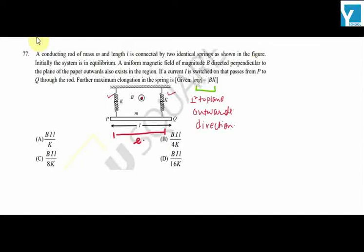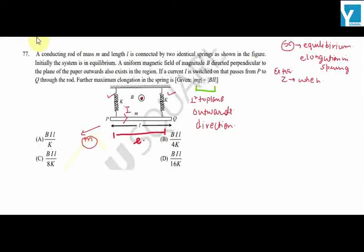So suppose this rod has given mass m. Now if we switch on the current through this rod and I is the current, then we have to find how much further elongation happens in the springs. Suppose in equilibrium situation the spring is stretched by distance x. So x is the elongation in spring in equilibrium, and z is the extra elongation when I is switched on.